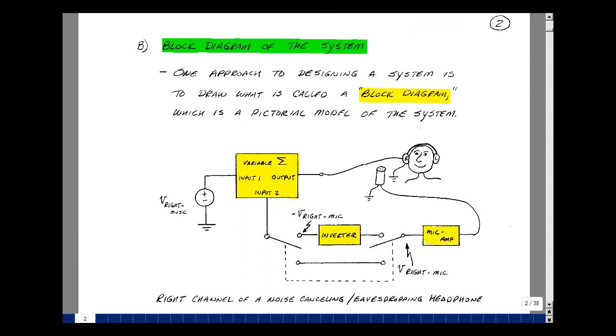One approach to designing a circuit or system is to draw what is called a block diagram. This is a pictorial model of the circuit or system. Let's do this for the right channel of music, then replicate it for the left channel. I've got headphones on, and I'm going to put a microphone near the earpiece, preferably inside, to pick up the background noise.